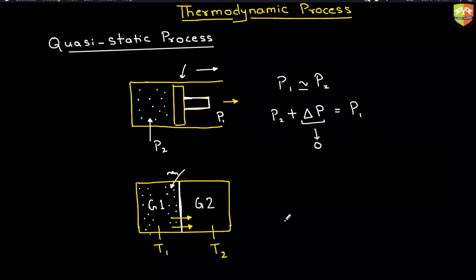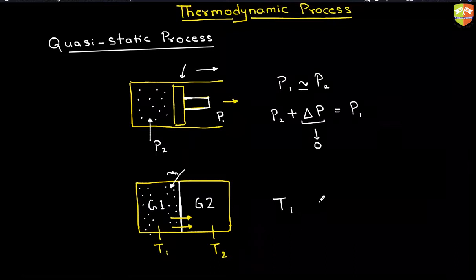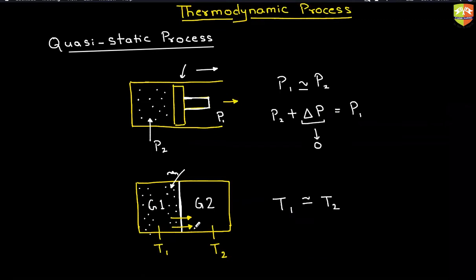So heat transfer and expansion — these two things should happen as if they are not happening, or you can say that it is happening extremely slowly. Then only you can say that the systems are in equilibrium and then only you can study them. So if heat is getting exchanged between T1 and T2, then T1 should be nearly equal to T2. That is how heat should be exchanged; otherwise the system will not be in equilibrium.